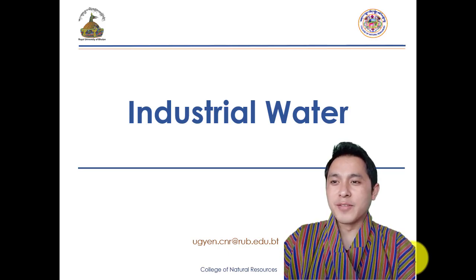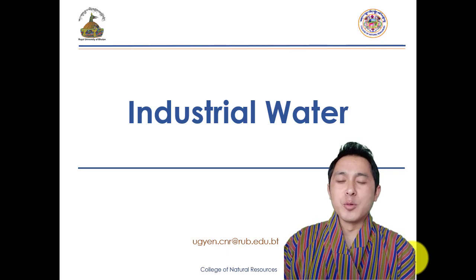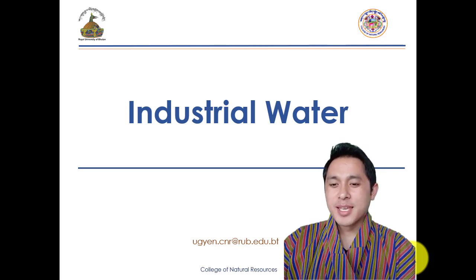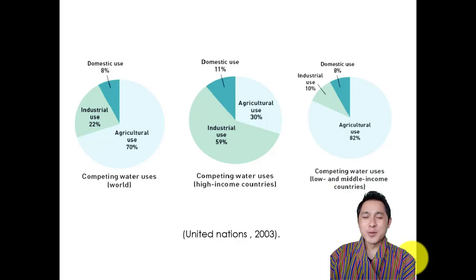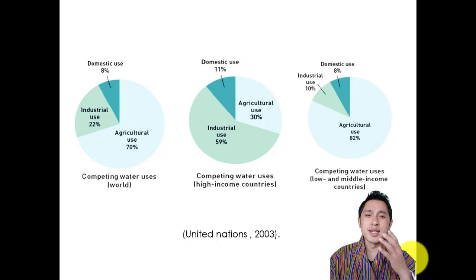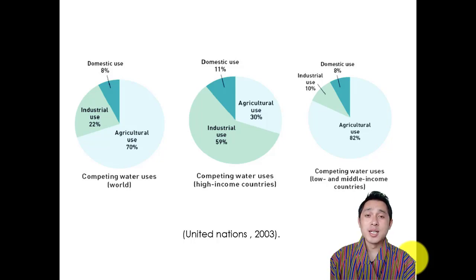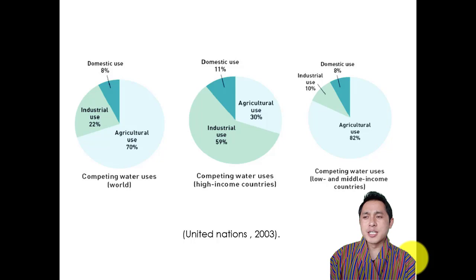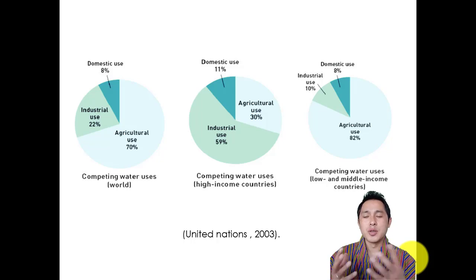Welcome back. We are now done with urban water use. Let us look at industrial water use. By the name itself, it suggests that industrial water use is water being used specifically for industrial purposes — not for domestic use or agriculture, but specifically for industries. The best example in our country is the hydropower sector. Water used for generating electricity and for making paper in pulp and paper mills are both forms of industrial water use.